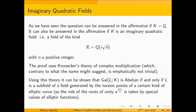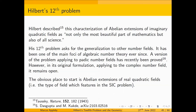Using this theory, you can show that field extensions of imaginary quadratic fields are abelian if and only if they're subfields of a field generated by the torsion points of a certain kind of elliptic curve — in other words, fields generated by special values of elliptic functions. Hilbert described this characterization of abelian extensions of imaginary quadratic fields as 'not only the most beautiful part of mathematics, but also of all science' — which is a bit over the top, but it clearly gave him a buzz. His 12th problem asks for the generalization: can you do it for things other than imaginary quadratic fields? As I said, a version applying to p-adic number fields has recently been proven, but in its original formulation it remains open.